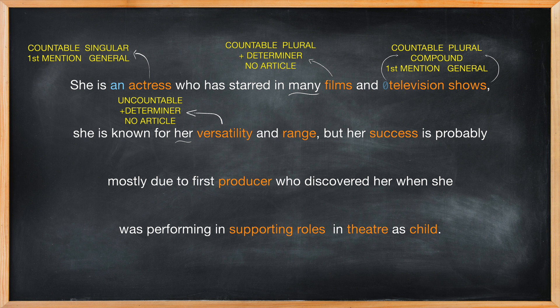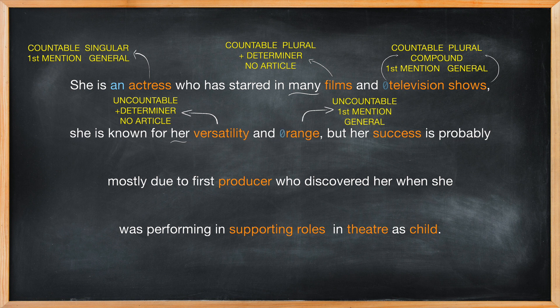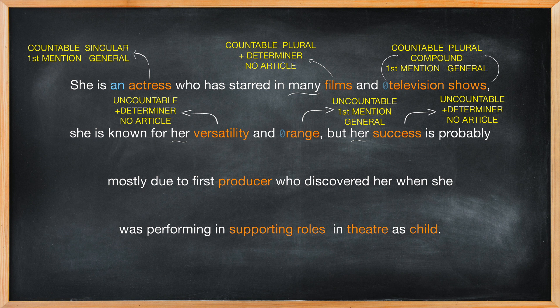Range can be used as a countable noun, but here the context tells us that it is uncountable, because it refers to the extent or scope of her acting skills, so a zero article is the right choice. Success is another uncountable noun used for the first time, but again it has the determiner 'her' in front of it, so no article is required.